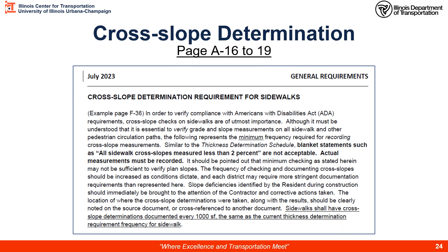On page A20, also related to sidewalks, we have cross slope determinations. Cross slopes are transverse to the direction of travel and are required for Americans with Disabilities Act (ADA) requirements. Again, the bold statement applies: you cannot use blanket statements — you must record at least the minimum number of actual cross slope checks. Cross slope checks have the same frequency as depth checks for sidewalks: one per every 1,000 square feet. Good practice: every time you take a depth check, go back and take a cross slope check at the same location once the sidewalk has been placed.